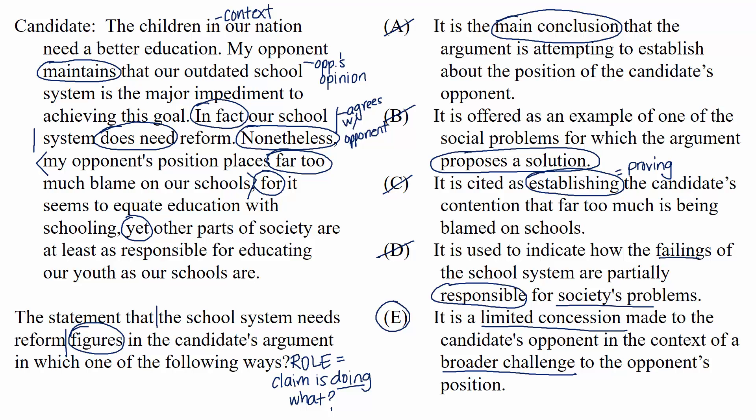To recap, for identify the role questions, it's helpful to mark the claim you're being asked about first, then analyze the structure of the passage. Where's the main conclusion? If the claim you're asked about is the main conclusion, you're done. If it's part of the support, figure out exactly what it's doing in the support. The emphasis is on what the arguer is doing, not the details of what the arguer is saying.